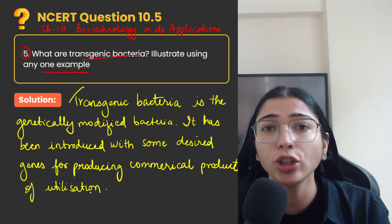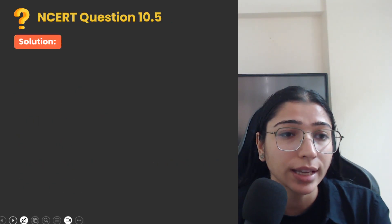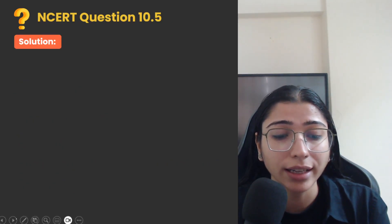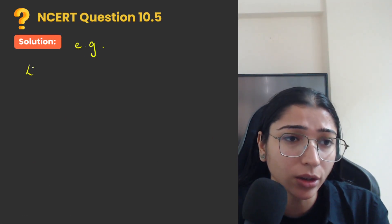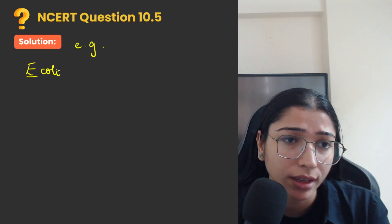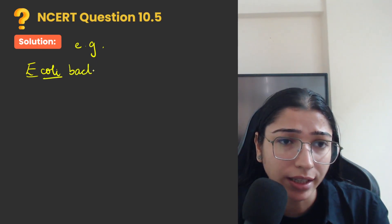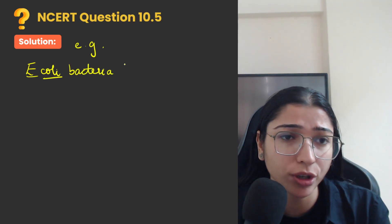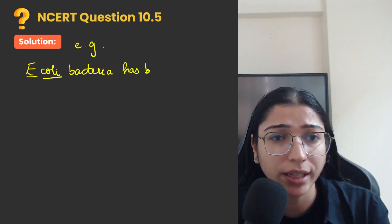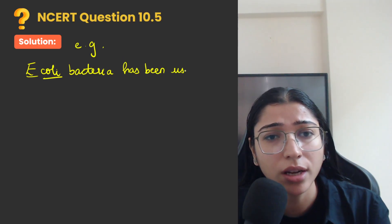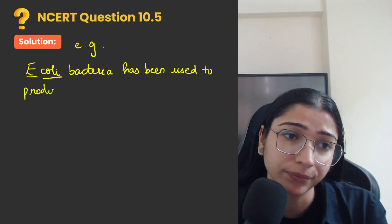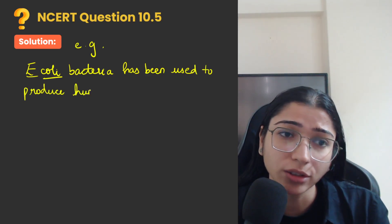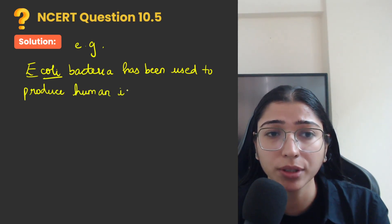For example, E. coli bacteria has been used to produce human insulin, which we use to treat diabetes. Human insulin to treat diabetes.